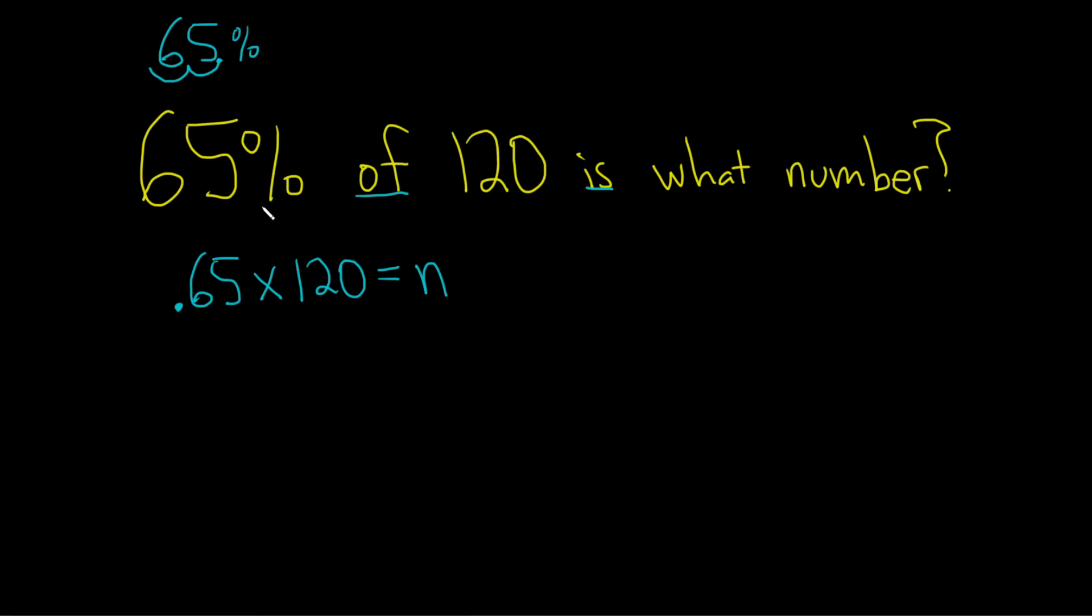So 65%, .65, 'of' means times, 120, 'is' which is equals, 'what number' which we called n. If you put this in your calculator, you end up with 78. So 78 is equal to n.